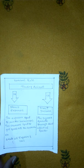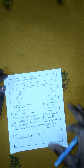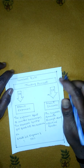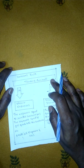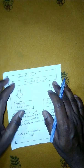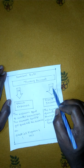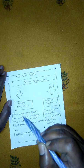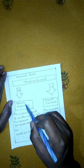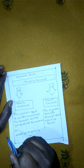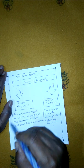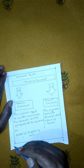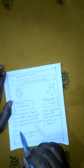The trading account is prepared based on the nominal account rule. It is divided into two sides: the left-hand side, called the debit side, and the right-hand side, called the credit side. In the debit side, all direct expenses are included — these are expenses incurred by the trader while purchasing goods from the supplier, such as transport and labor charges.